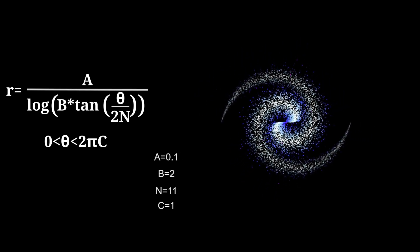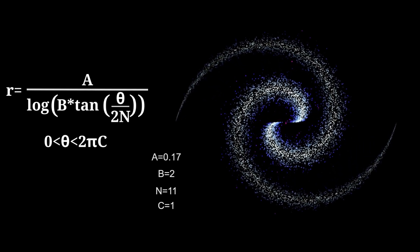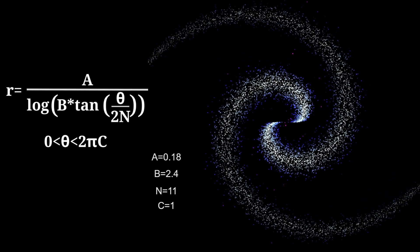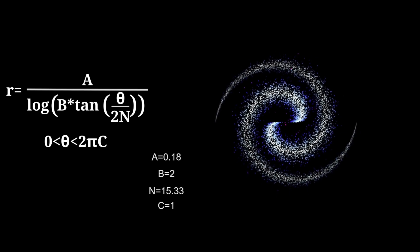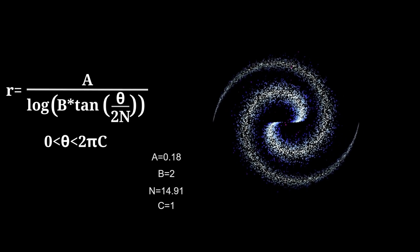A is simply a scale parameter. B and N determine the spiral pitch. Roughly, B determines the size ratio between the bar or bulge and the arms, while N controls the tightness of the spiral winding.